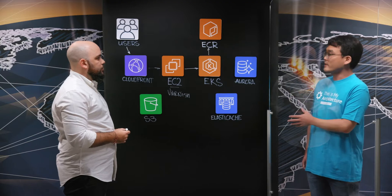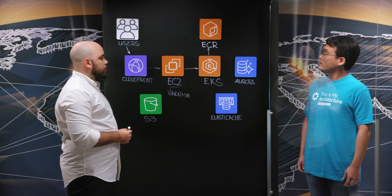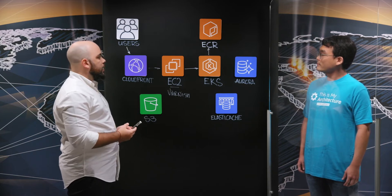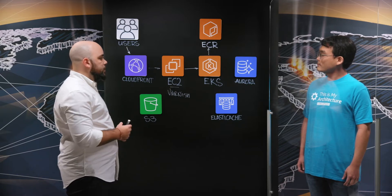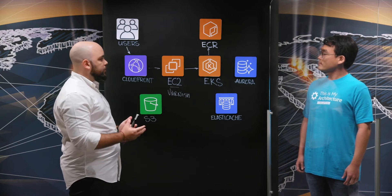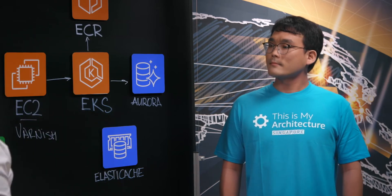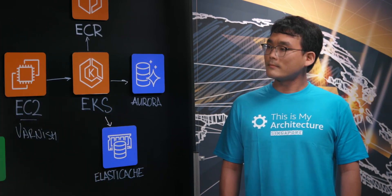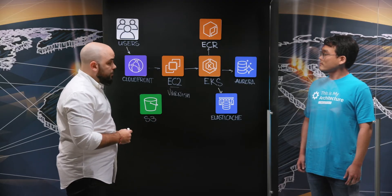How about Aurora and ElastiCache — what roles do they play in this architecture with Magento? Aurora MySQL holds all our business data. We have a read replica with Multi-AZ to contain all the information the business requires. For ElastiCache, we are using Redis and caching as much content as possible from MySQL using Redis.